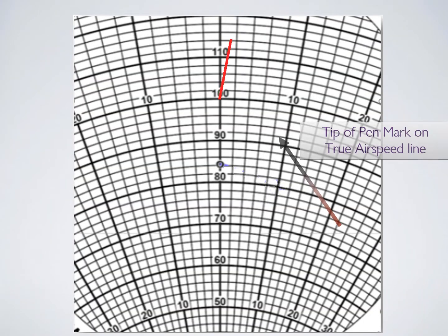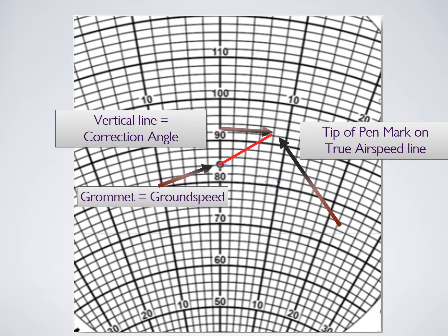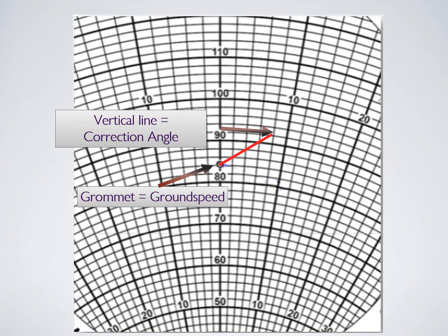Once you have the desired track heading on the top of the E6B in line with the true line triangle, you want to slide your ruler through the device until you have the tip of the line on the true airspeed line going horizontally. And then you read your ground speed on the grommet as mentioned before and your vertical line is shown there splayed out to the right.